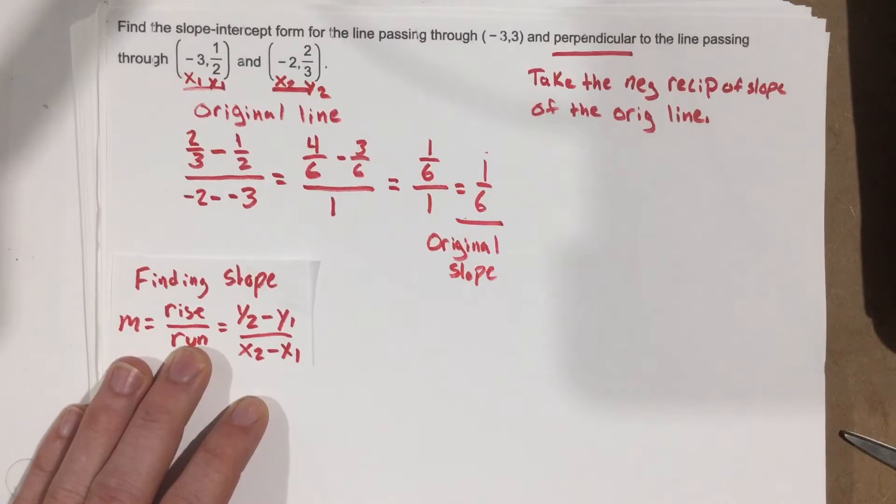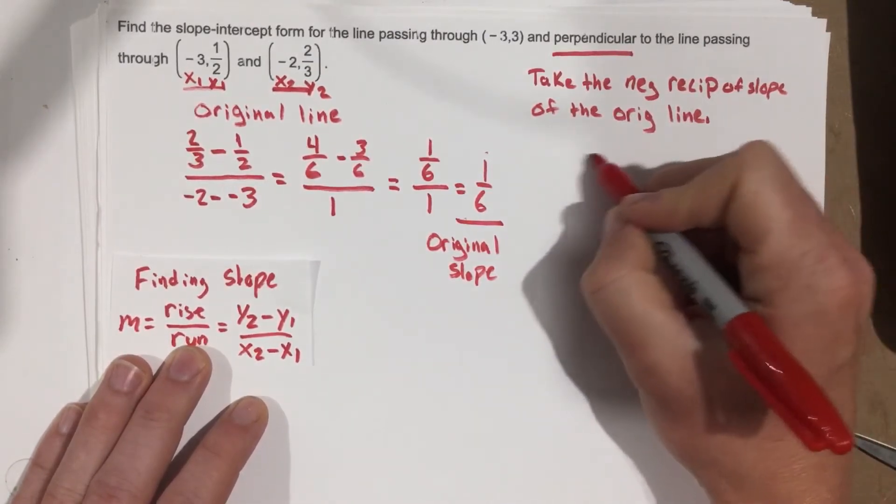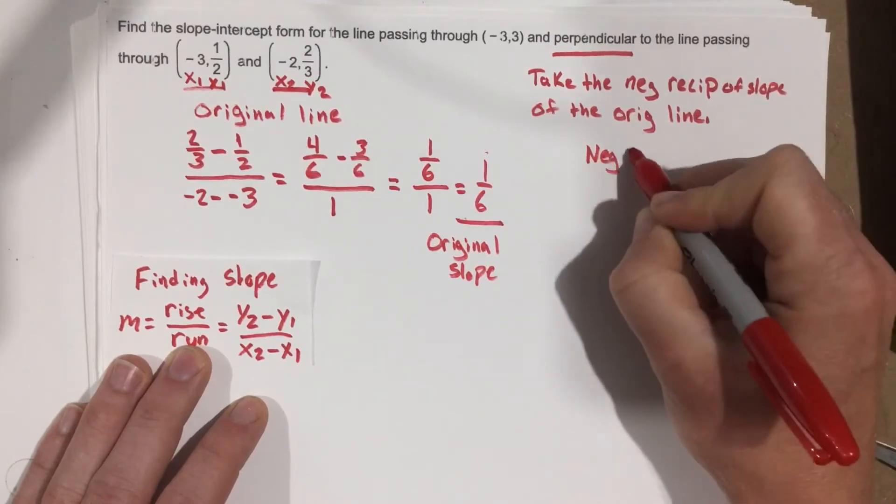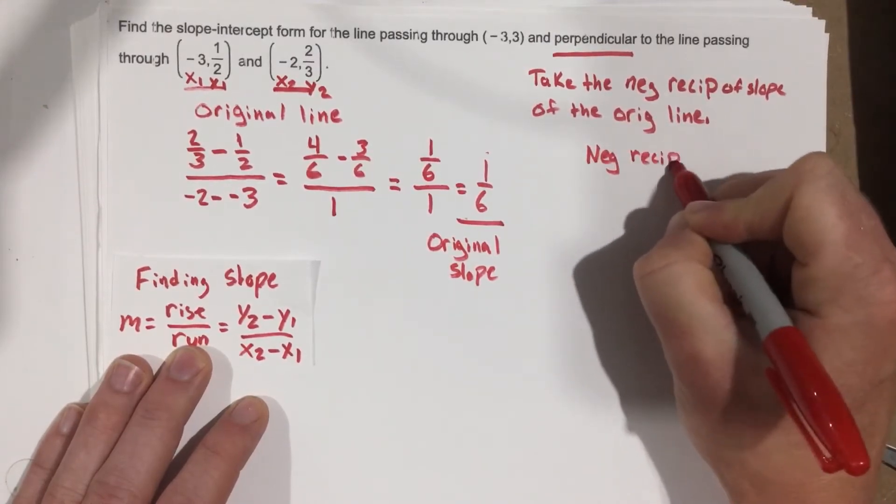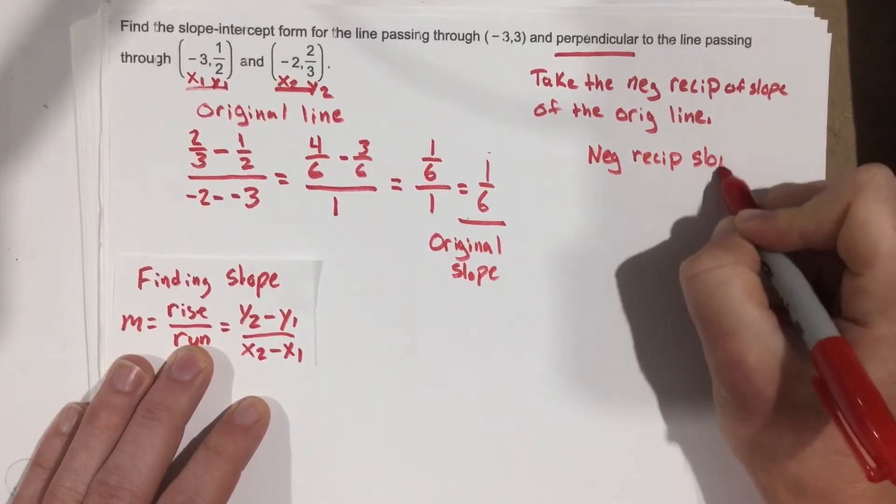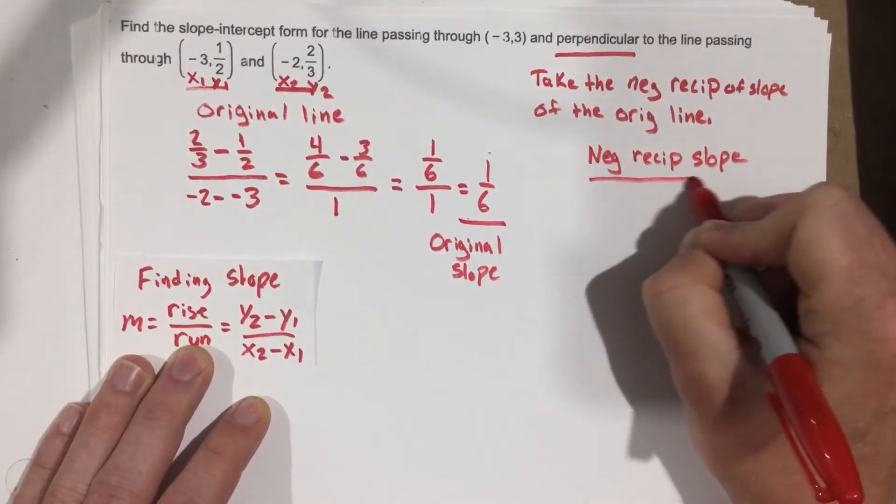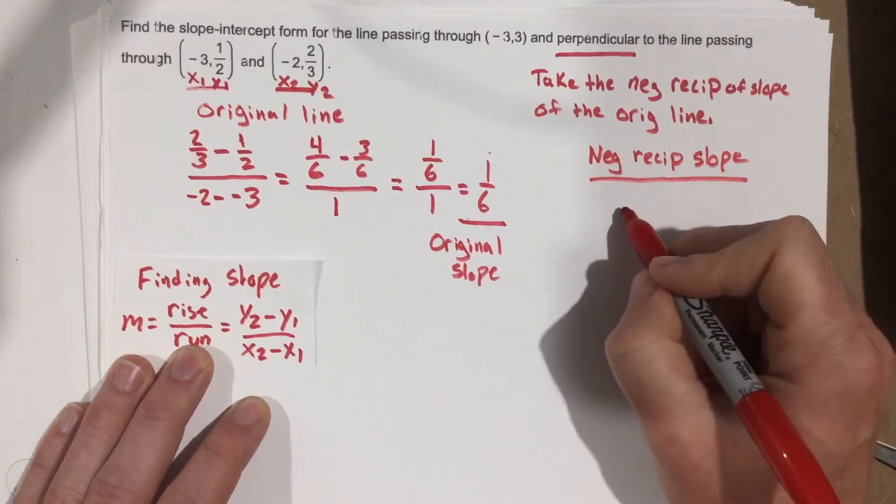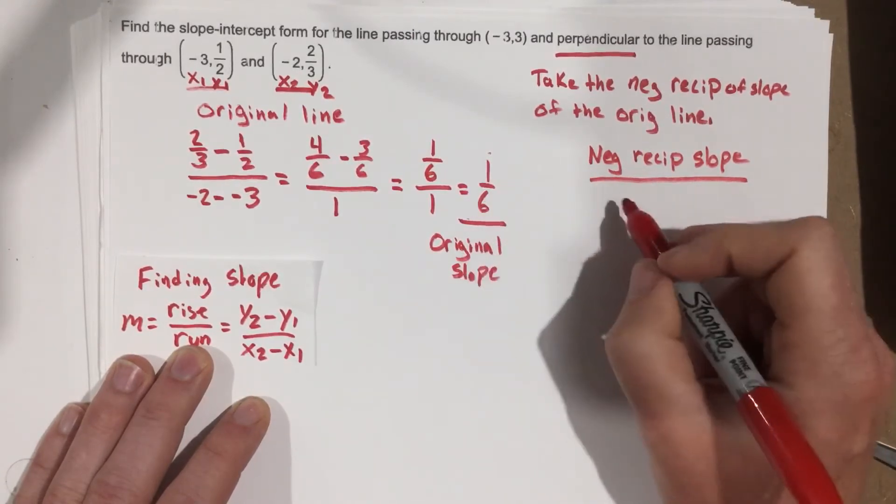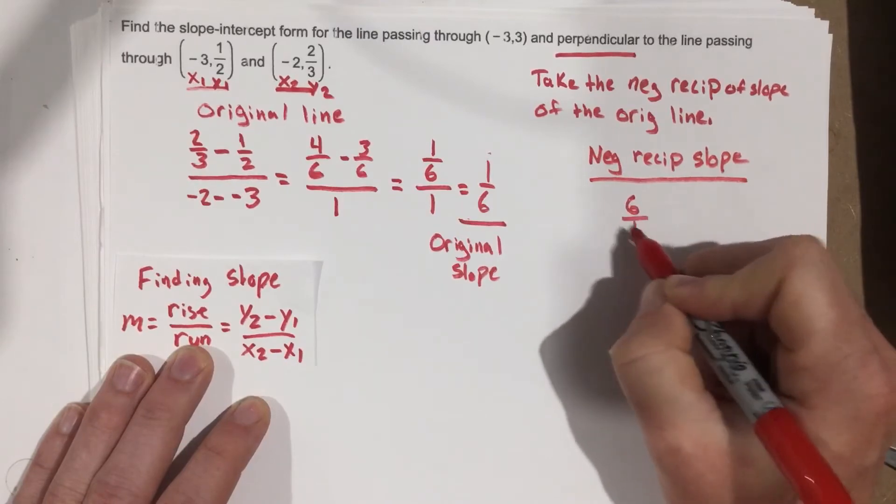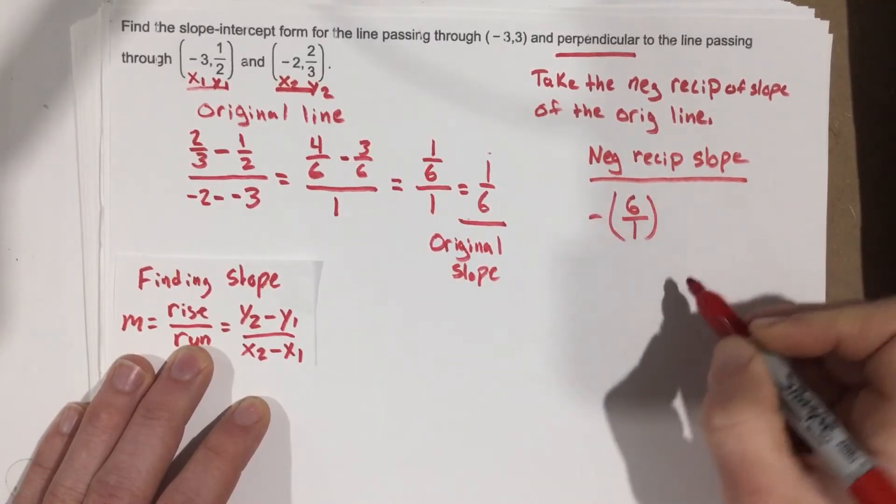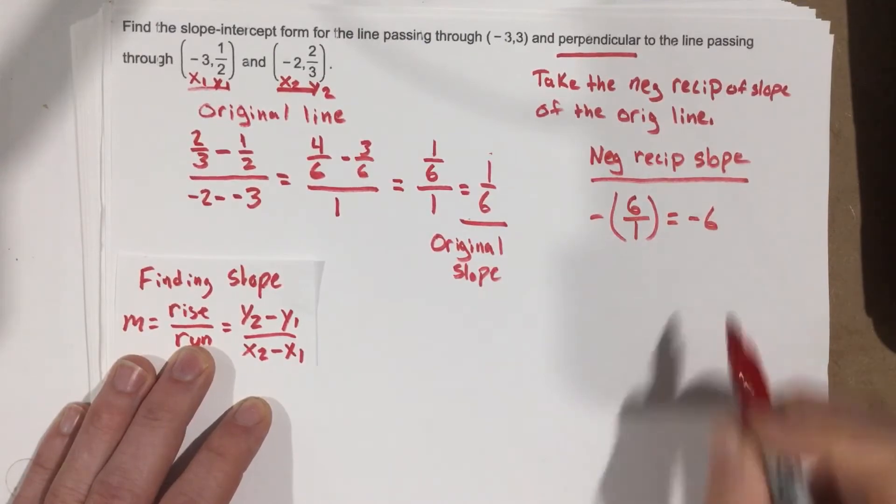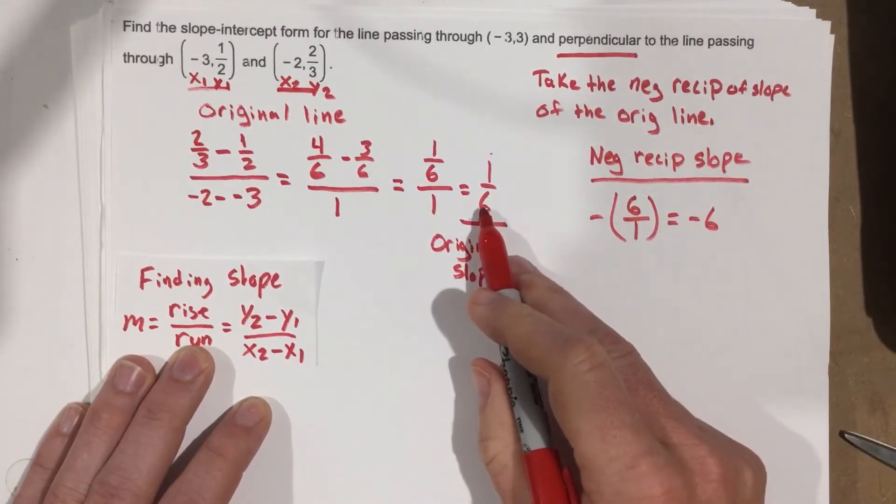So for my new line, I need to use the negative reciprocal. So let's go ahead and say negative reciprocal. Well, if I want to take the negative reciprocal of this, first of all, I need to take the reciprocal, which we know 1/6 is really going to be 6 over 1. And I need to take the negative version of that, which gives you negative 6. So negative 6 is the negative reciprocal of this slope here.